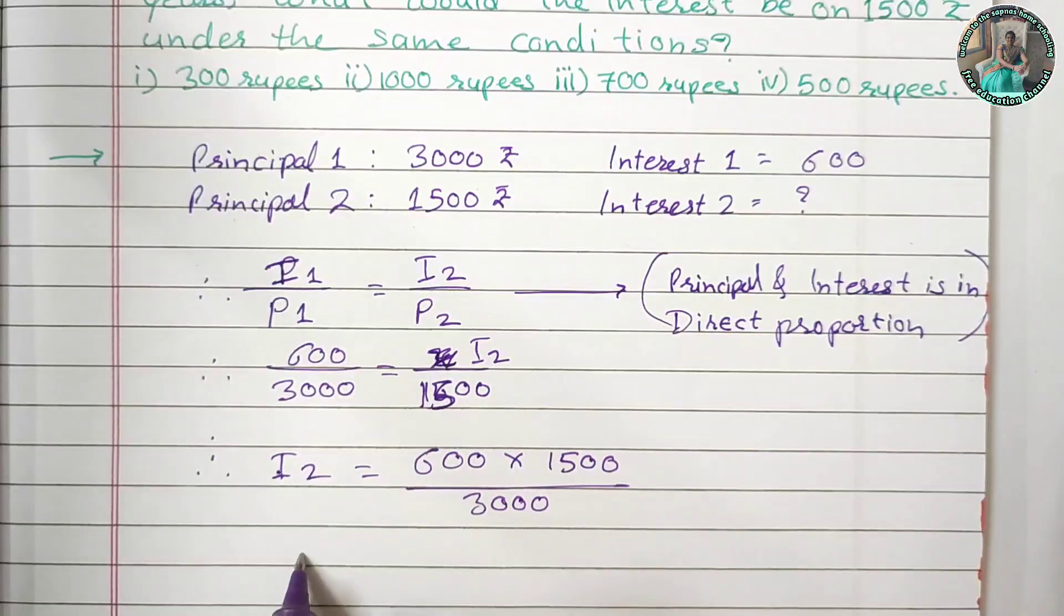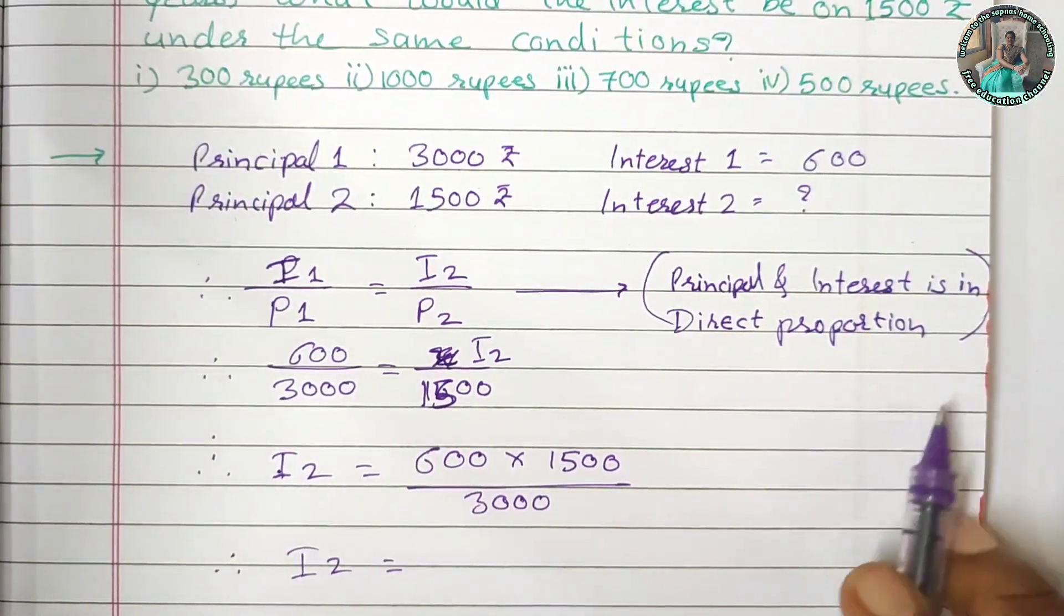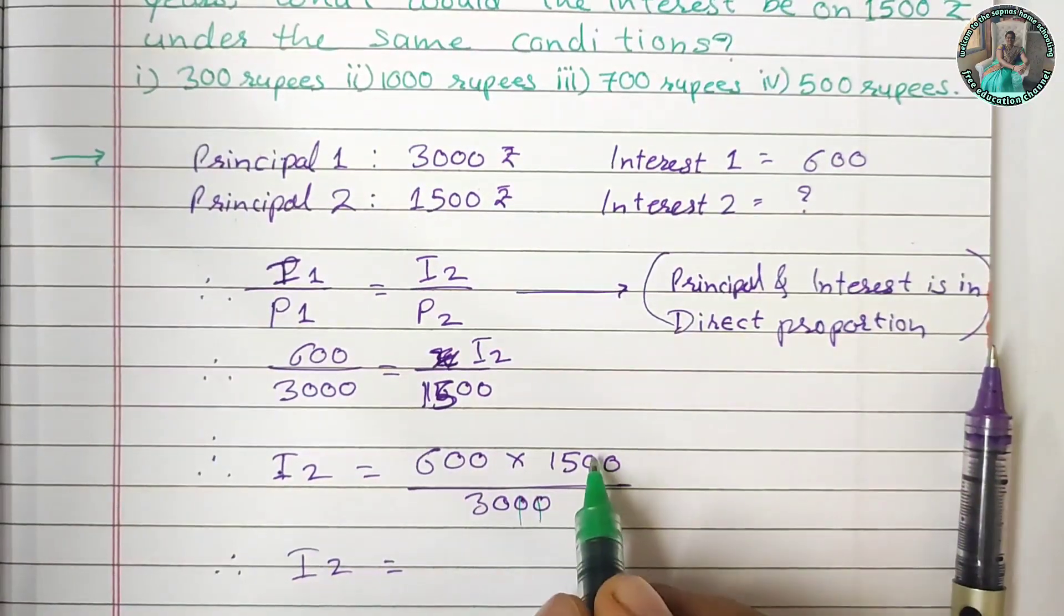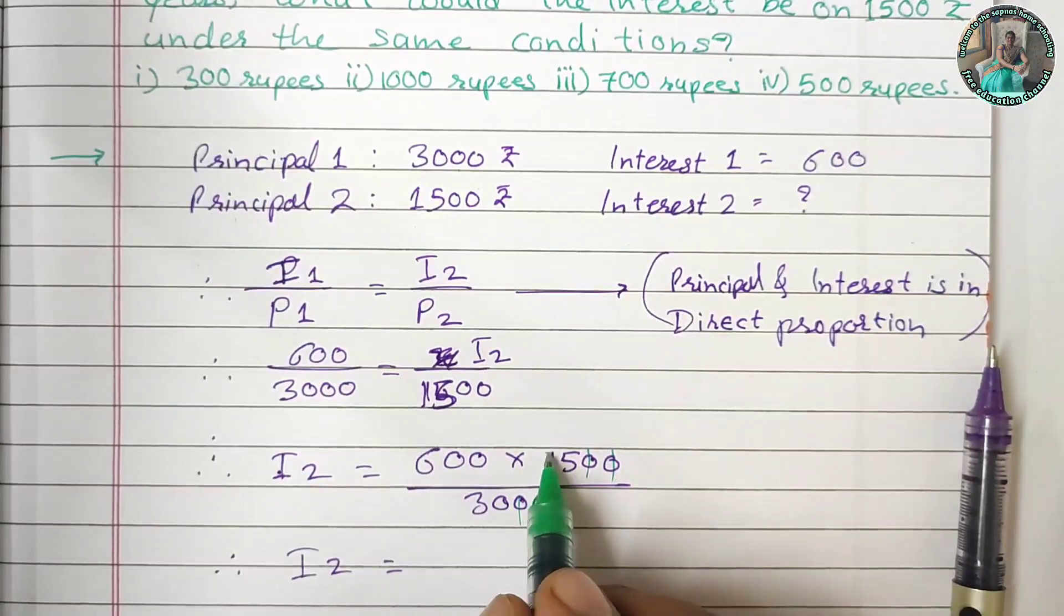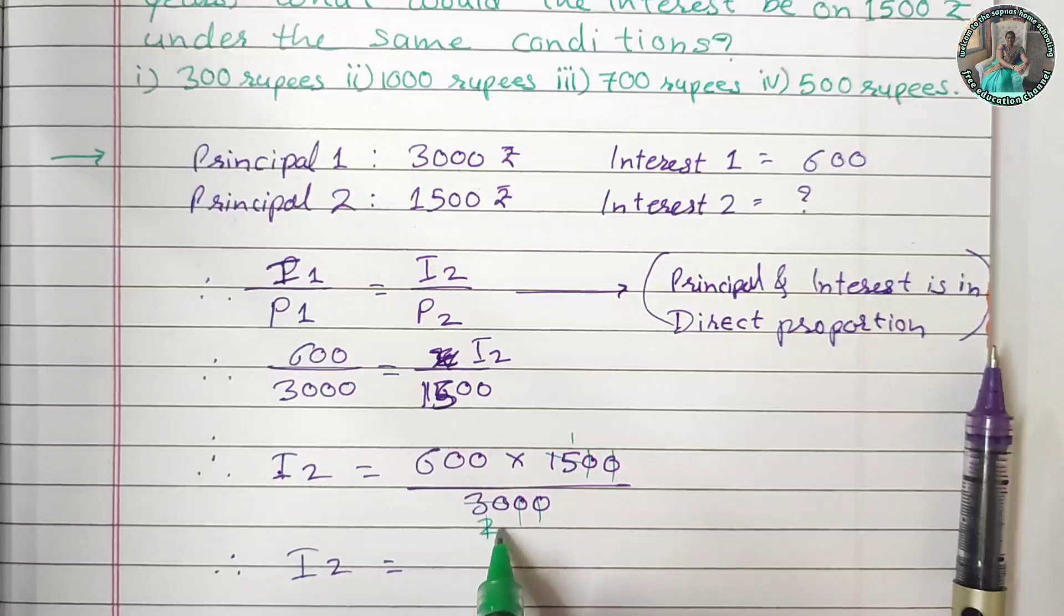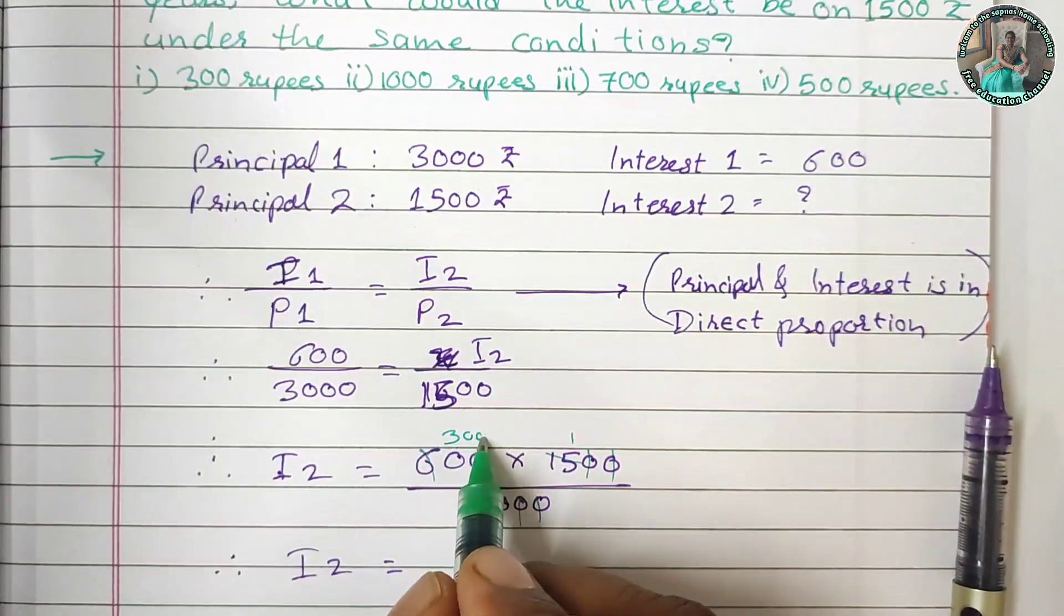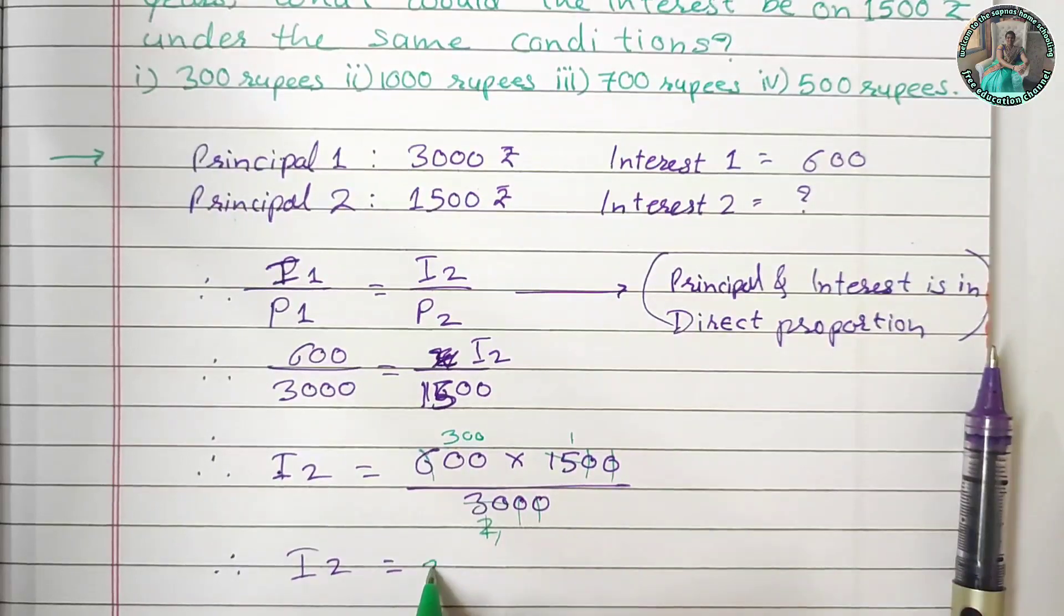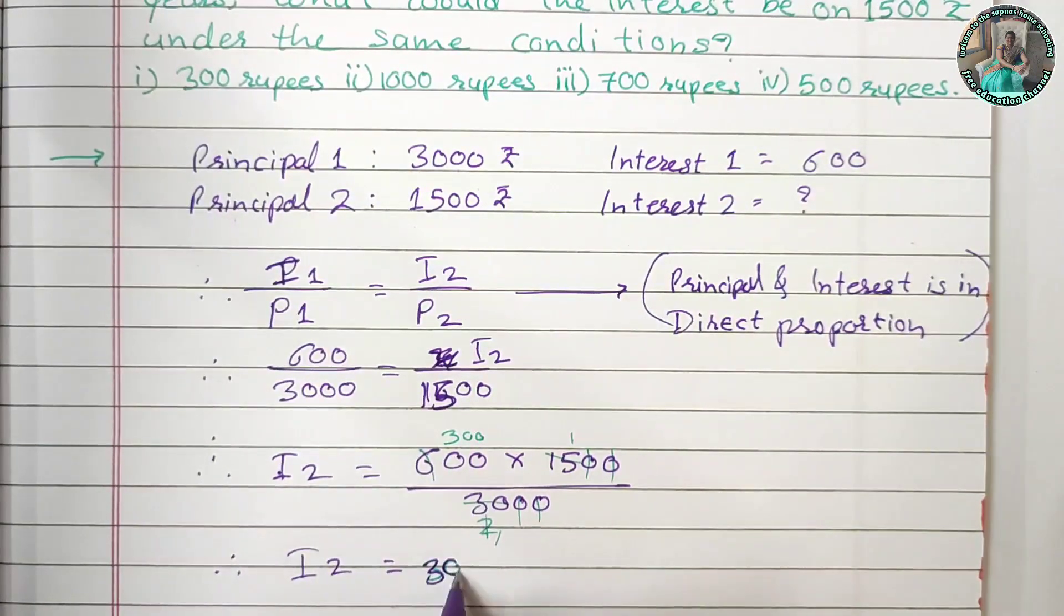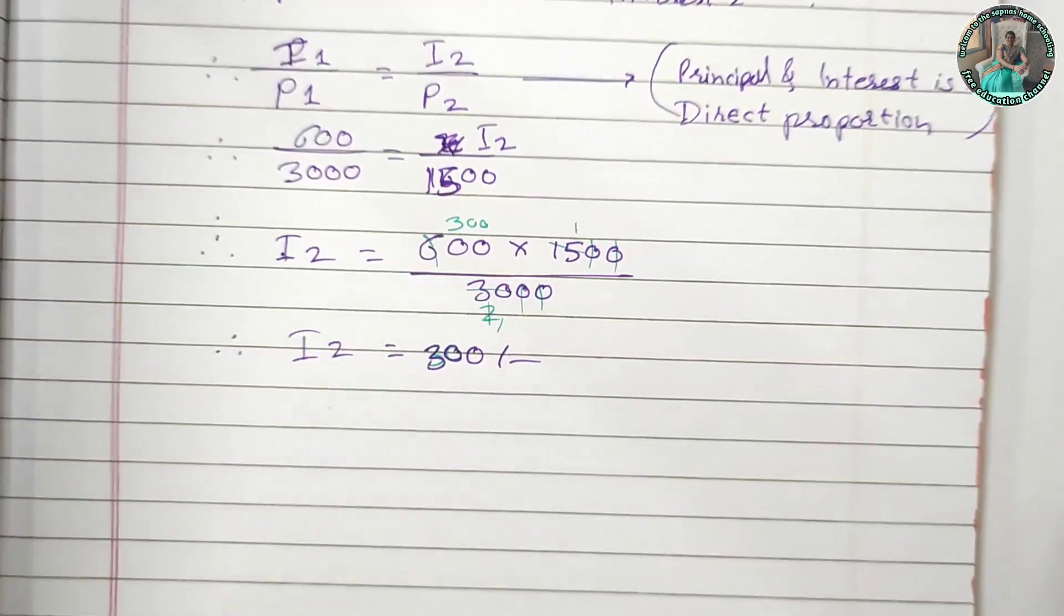I will solve this. 600 times 1,500 divided by 3,000 equals 300. The answer is 300. Interest 2 is 300.